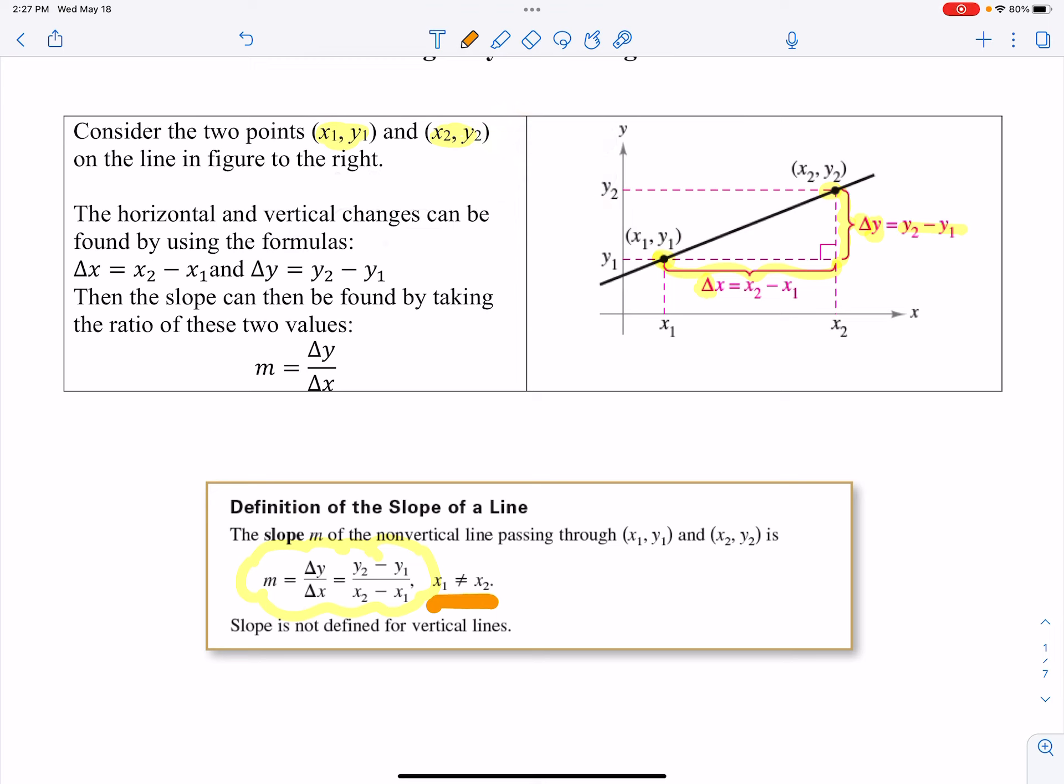Now why would that be? And what does that mean if the two X values equal each other? Let's just say they're both two, for example. I don't really care what the Y value is. Maybe the Y value is five and Y₂ is seven, right? But I'm looking at two points where the X coordinate is the same.